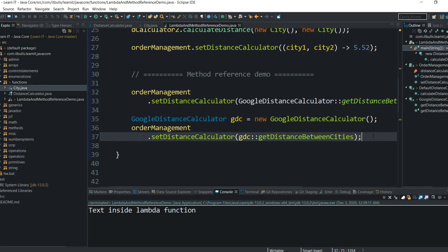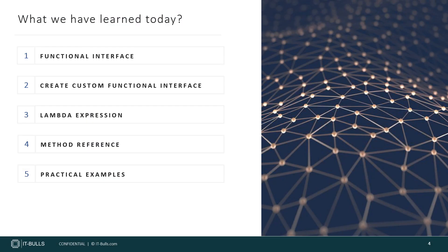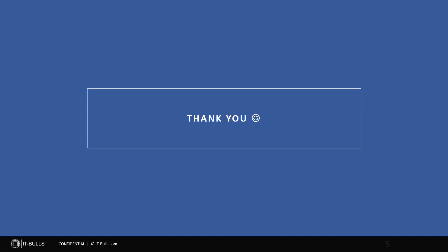We learned a lot today. Let's recap: we learned what a functional interface is and even created a custom one. Now you know what a lambda function is and how to write your own lambda expression. After that we learned what a method reference is, and on real examples we learned how to apply this knowledge. That's it for this lesson. Thank you for your attention. See you in the next lesson!